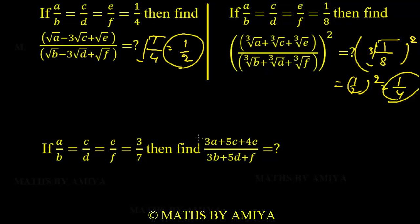For the last question, the given ratio values are 3, 3, 5, 5, 4, 1. The change is different. So the answer is cannot be determined.